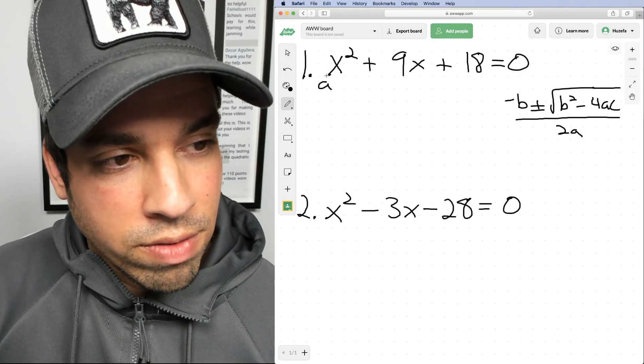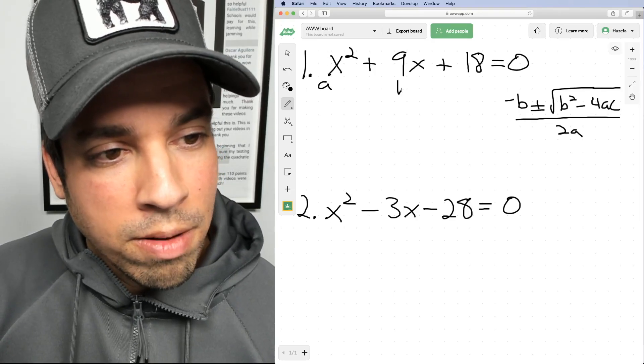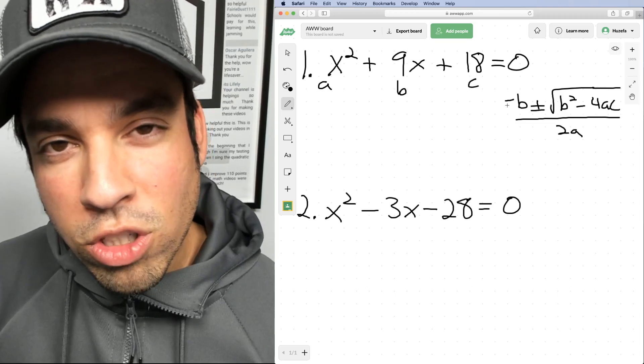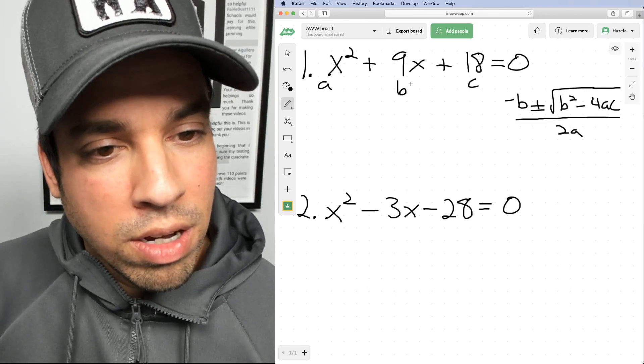So what are all these? A is whatever number is in front of the X squared, which in this case is one. B is that nine, and C is 18. So now we're just gonna do a little plug and chug. I'm gonna plug everything in.